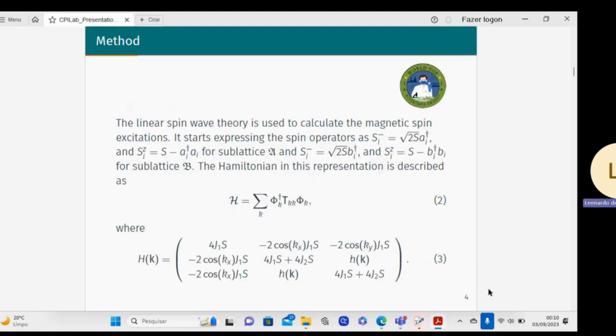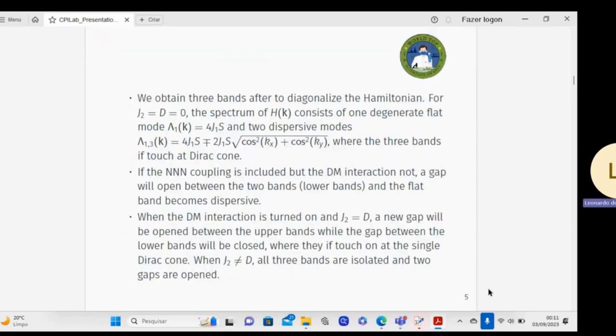The linear spin wave theory is used to calculate the magnetic spin excitation. It starts by expressing the spin operators for sublattices A, B, and C. The Hamiltonian in this representation is described in the form of a matricial form. I have a 3 by 3 matrix given by equation 3. We obtained the bands after diagonalizing the Hamiltonian for J2 in this regime.